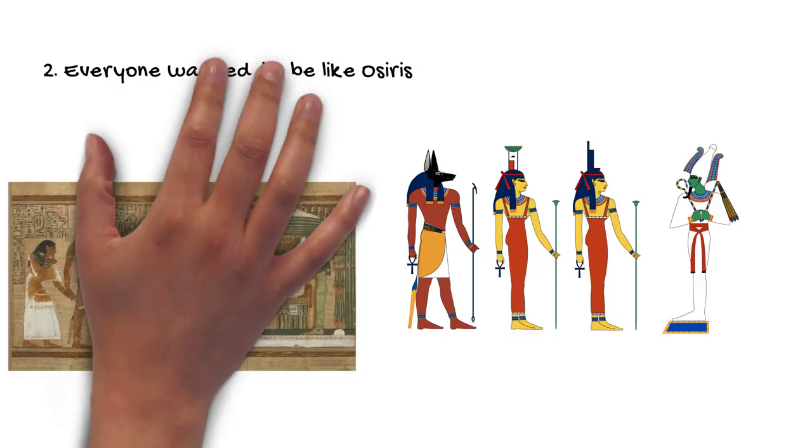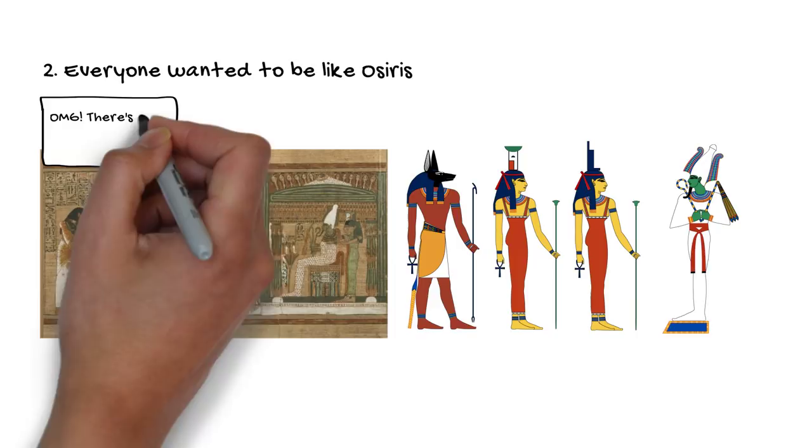Osiris was the model for all ancient Egyptians. If they imitated the process that he went through, they could also be reborn into the afterlife.